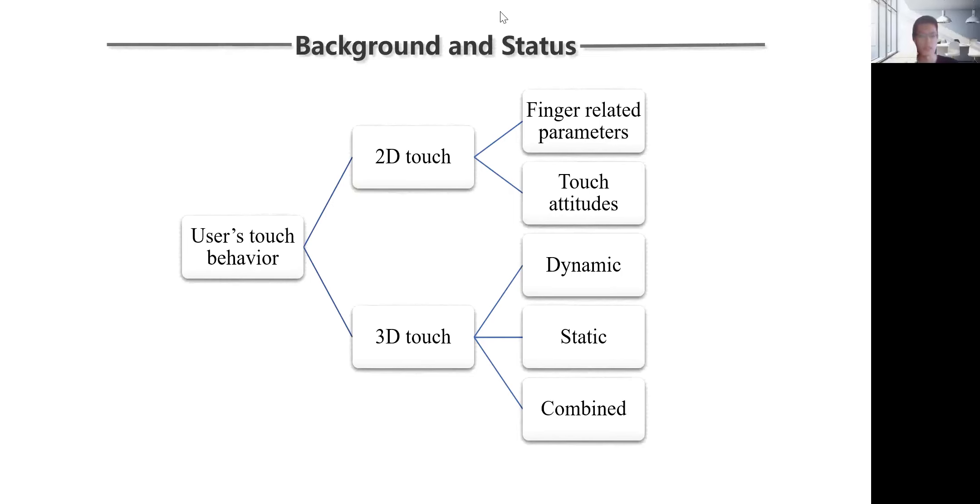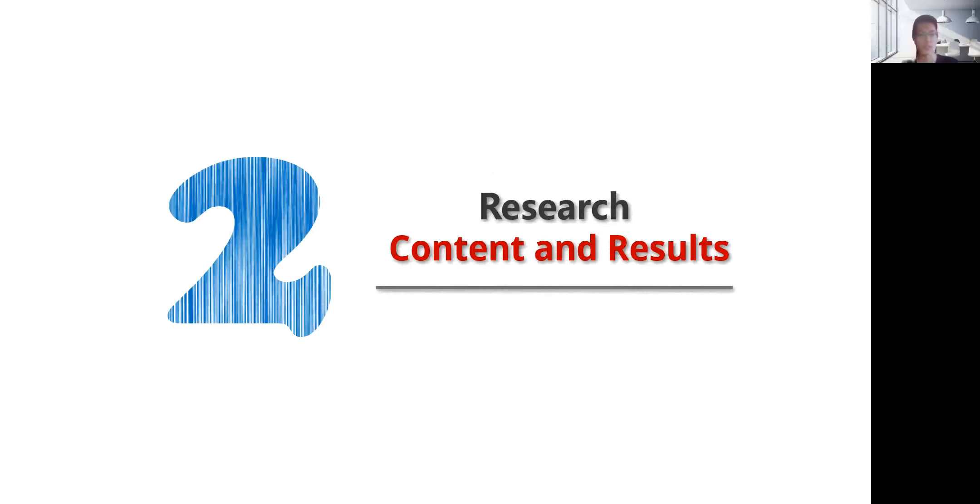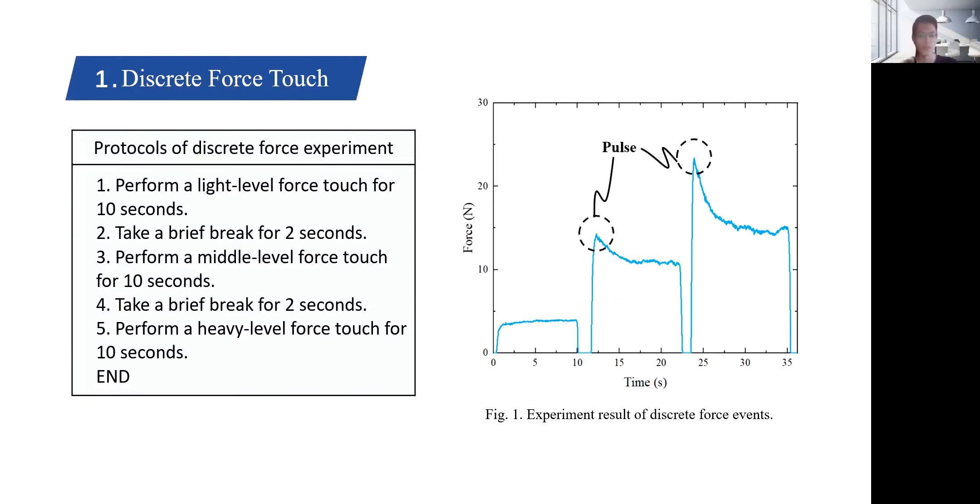Next is our research content and results. For discrete force touch detection, the volunteer was asked to perform three force levels from light to heavy according to his habit. Each touch event lasts 10 seconds with an interval of 2 seconds. The experimental protocol is given on the left, and Figure 1 shows a typical result.